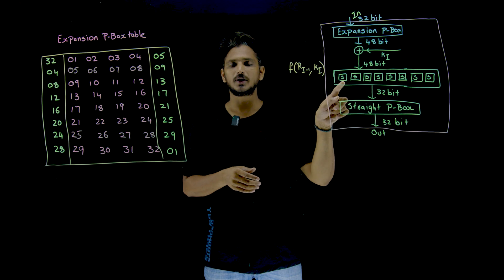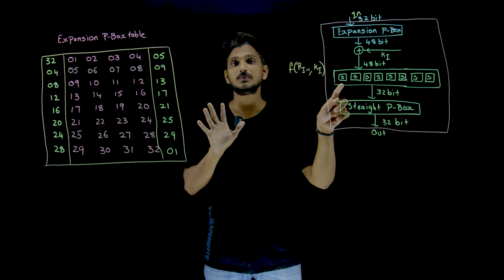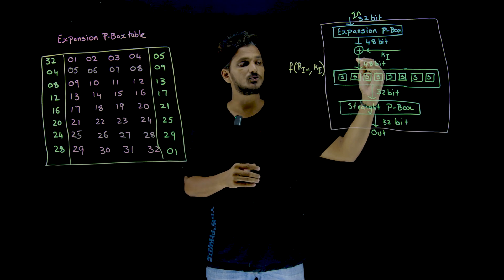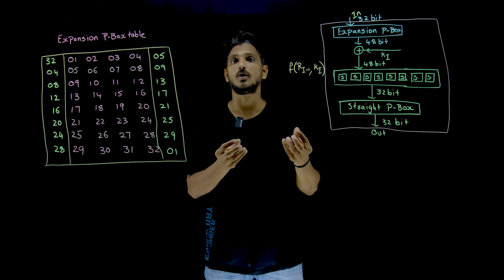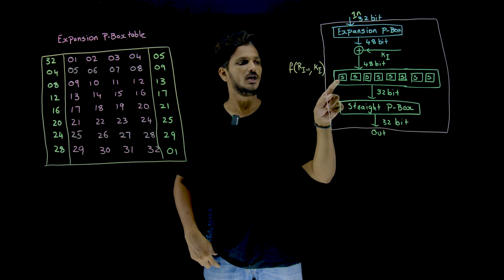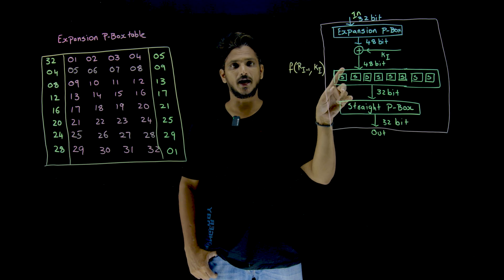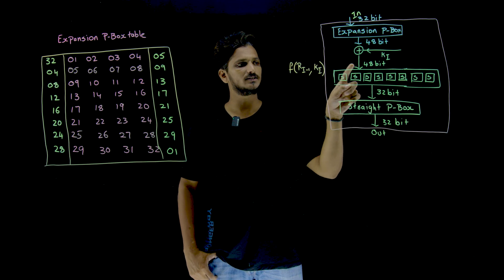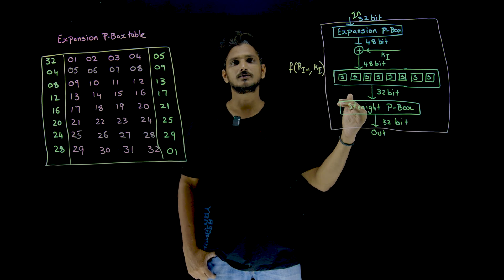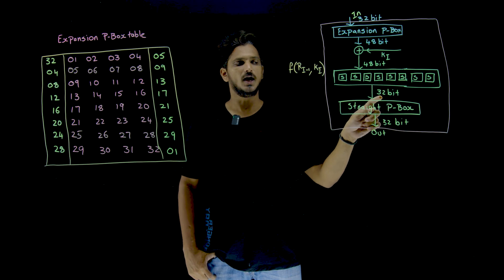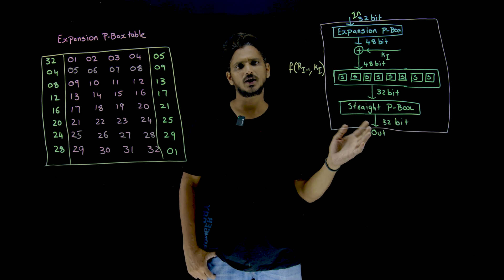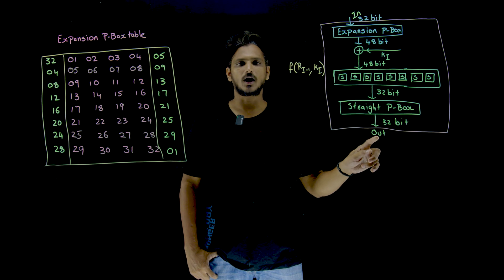In the next step, you have 8 S-boxes. 48 bits are taken as input; each S-box is going to take 6 bits as input and give 4 bits as output, because it has to reduce — here we are using compression S-boxes. So each S-box takes 6 bits as input, and with 8 S-boxes taking 6 bits each from the 48 bits, you get 8×4 = 32 bits as output. These 32 bits are sent as input to the straight P-box, which takes 32 bits as input and produces 32 bits as output by shuffling the bits.